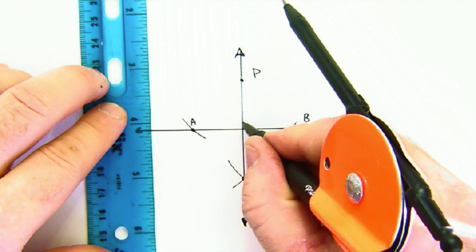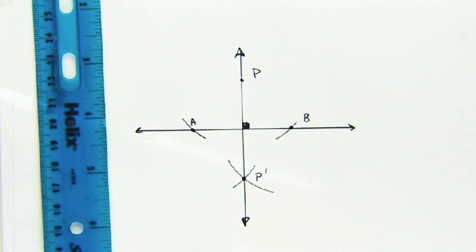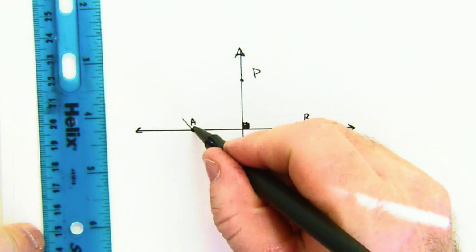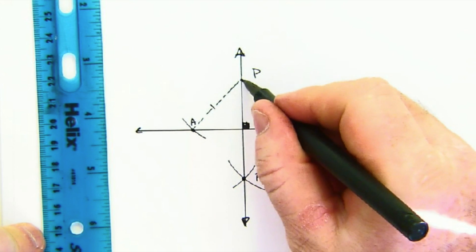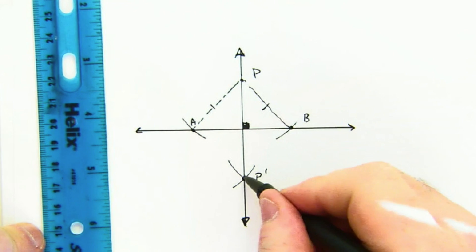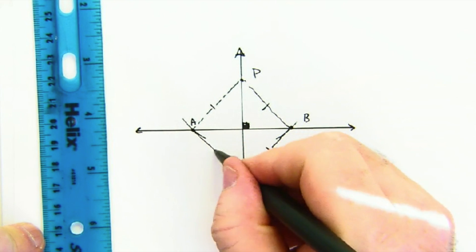That might seem a little bit like magical hocus-pocus, but what's happening behind the scenes is by not changing our compass we had a radius here that's the same as a radius here. By not changing our compass on the other side, we got another radius and another one.